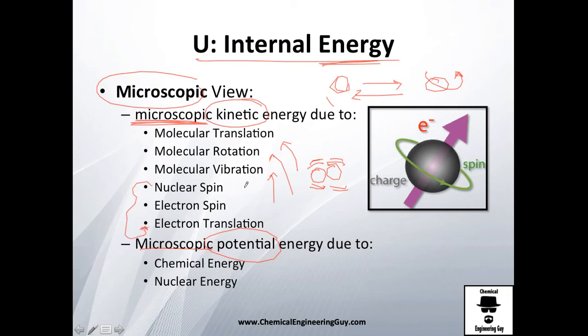Now the nuclear spin, electron spin, and electron translation - I don't want to explain that much because that's more into quantum mechanics, but you'll get the idea. The electron is spinning as the molecule is rotating. The electron spin, then the translation of the electron - it doesn't only move like this but it goes around the nucleus. And the nuclear spin is also the nucleus spinning, so if you have protons and neutrons, it's also spinning.